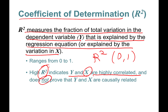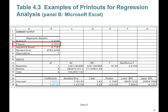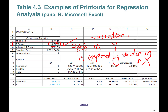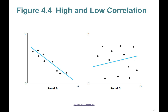However, a high R-squared does not prove that Y and X are causally related — it does not prove that X causes Y, only that there is a high correlation between them. Here, R-squared is 0.76, meaning 76% of the variation in Y is explained by variation in X — that is really good. The higher the R-squared, the better.